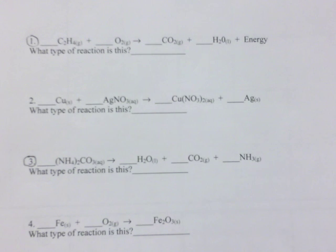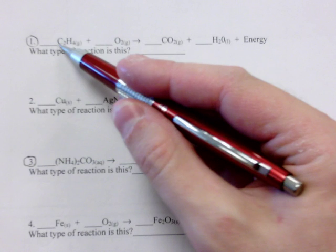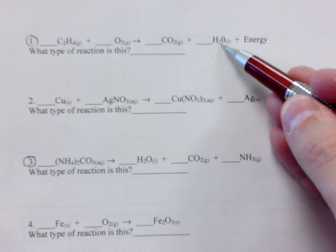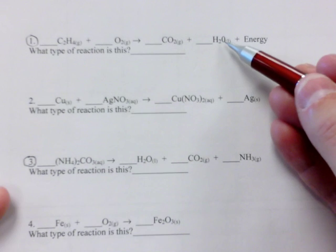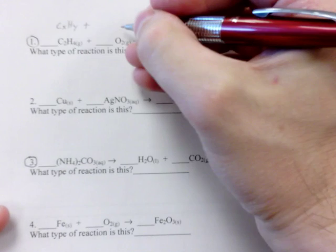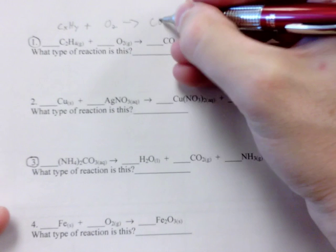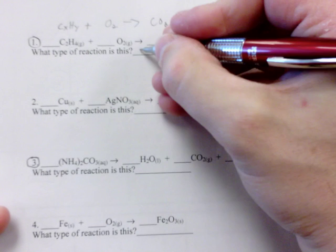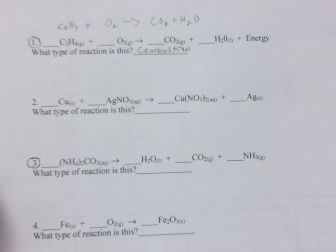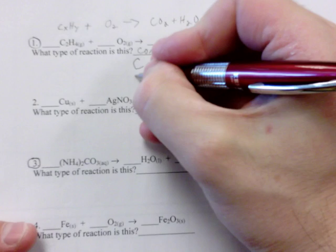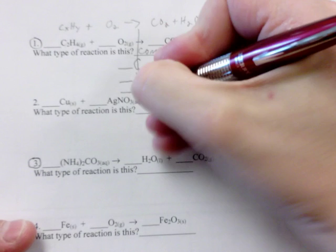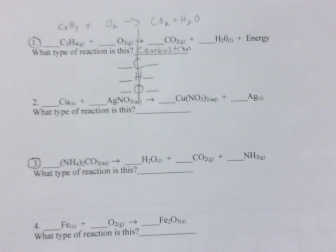First, let's identify the type of reaction. I see C2H4 — that sounds like a CH compound — plus oxygen, producing carbon dioxide and water. This follows the formula for a combustion reaction: CxHy + O2 → CO2 + H2O. If it matches exactly this pattern, you know it's a combustion reaction.